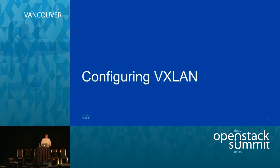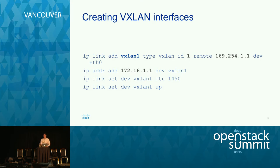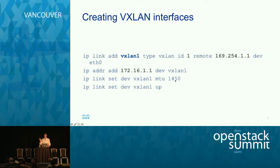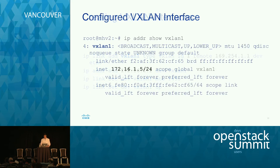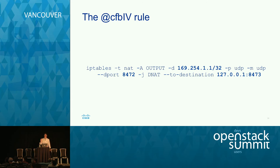To configure VXLAN, you use standard IP link or IP route tools. You add an interface called VXLAN1 with type VXLAN, give it an ID, and point it to a remote — where broadcast, unknown, and multicast packets are sent. In an OpenStack deployment you'd add a bridge with VMs connecting into it. You set an MTU size to accommodate the VXLAN header, then bring it up. Running IP addr show will display the interface name and its associated IP address.